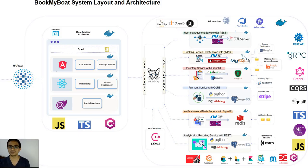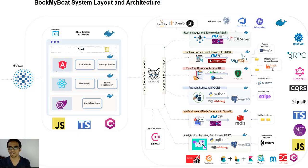Now all these services will have a supporting layer. For example, in the booking service we will have a booking confirmation area with Hangfire jobs running. We also have a message queue to communicate between the booking service and inventory service through RabbitMQ. We will have inventory syncing implemented using the Quartz job for the inventory service, and the payment API implementation will include Stripe, along with a notification queue for notification and alert.